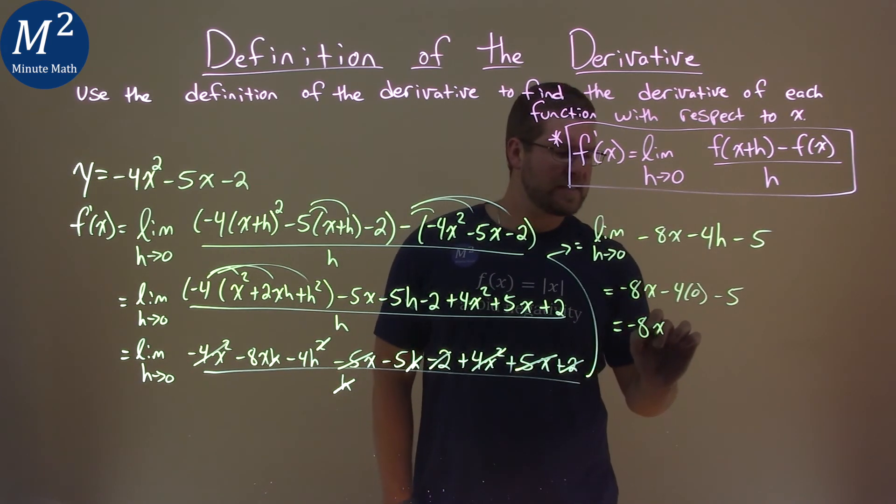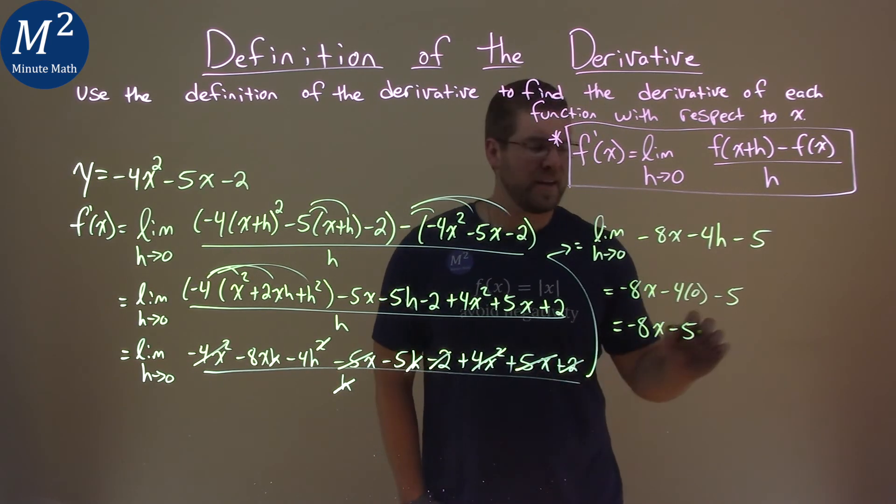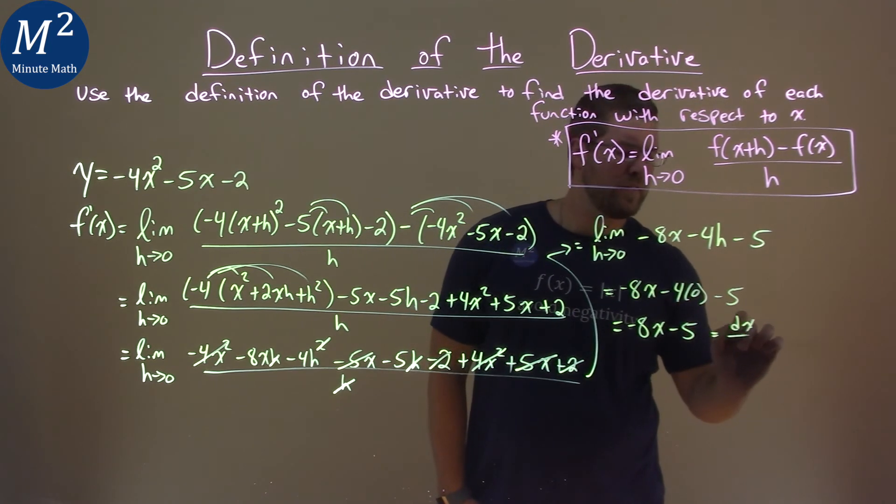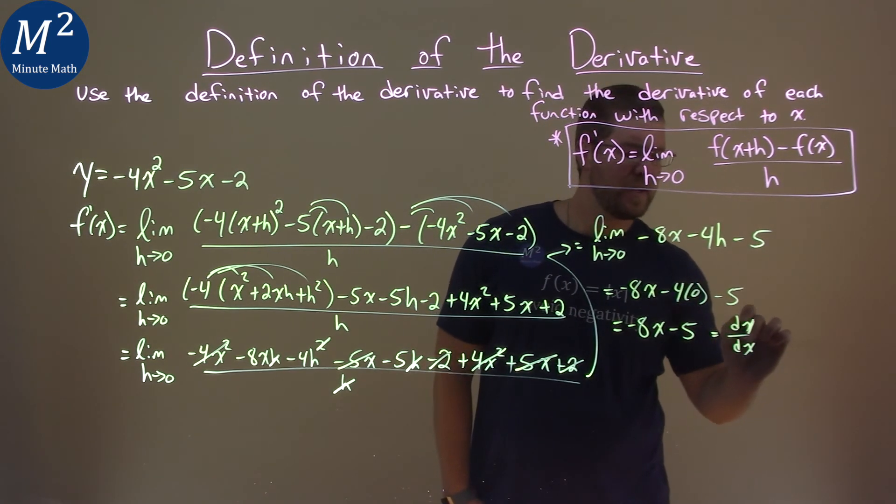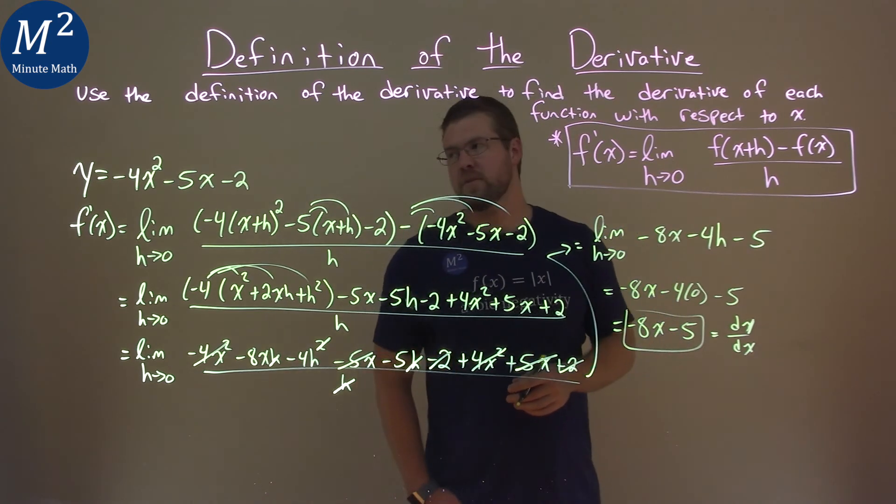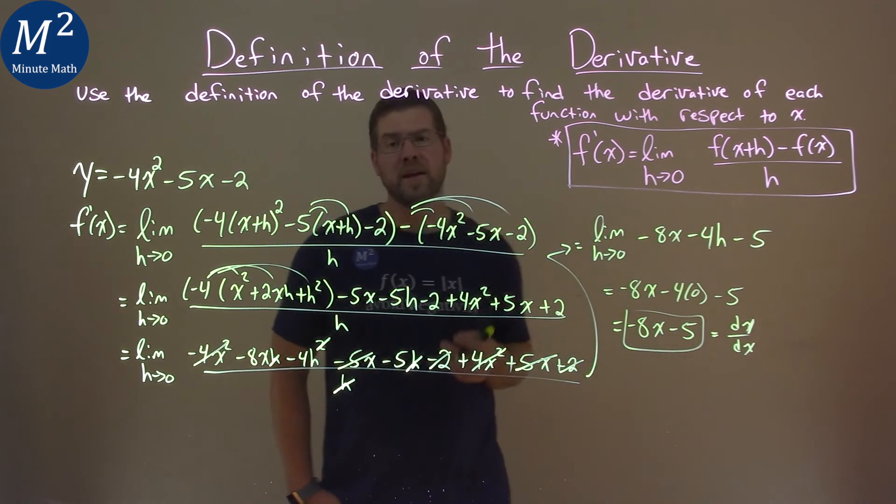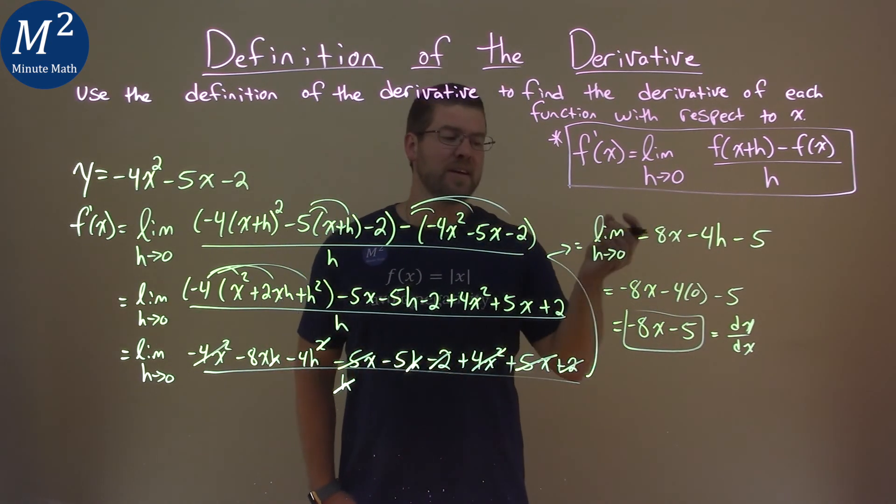So, we have negative 8x minus 5. And guess what? That's our derivative. That's our dy dx right here. That is our f prime of x or y prime. So, our final answer here is negative 8x minus 5.